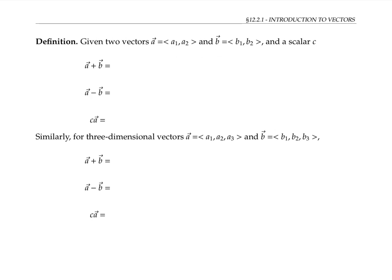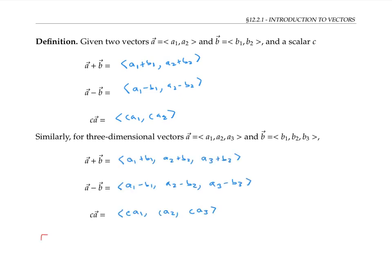Given two vectors a and b defined in terms of components and a scalar c, we define a plus b by adding components: ⟨a₁ + b₁, a₂ + b₂⟩. Similarly, a minus b is found by subtracting components. To find scalar c times vector a, we multiply c by each component of a; similar formulas hold for 3D vectors. For example, adding ⟨1, 2, 3⟩ to ⟨5, 7, 12⟩ gives ⟨6, 9, 15⟩, which also happens to be three times the vector ⟨2, 3, 5⟩.